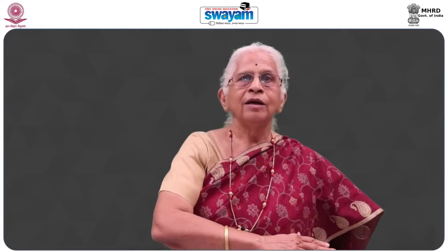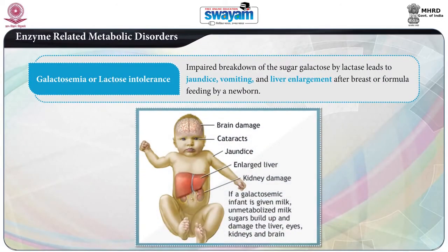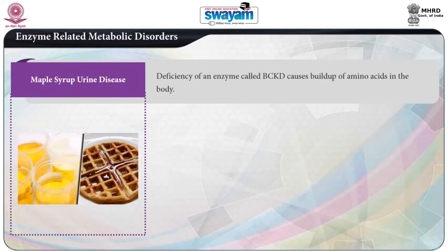Depending on that enzyme's job, its absence means toxic chemicals may build up, an essential product may not be produced, or an essential nutrient is not utilized. Galactosemia or lactose intolerance is because of the impaired breakdown of the sugar lactose by lactase, and it leads to jaundice, vomiting, and liver enlargement after breastfeeding or formula feeding by a newborn.